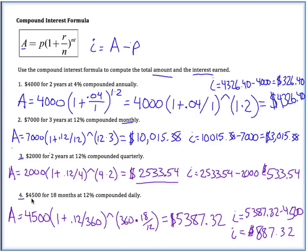And for number four, one tricky thing here is if you're doing 18 months, you need to change that into years. So you could either do 18 over 12, or you could have done 1.5 right there. And here's your total amount, $5,387.32. And your interest, $887.32.